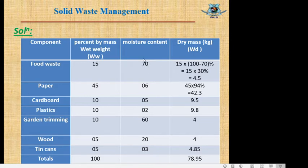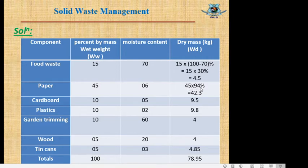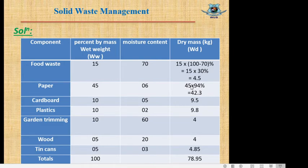If moisture content is 70%, then dry mass is 30%, so total dry mass for food waste will be 15 × 30% = 4.5 kg. For paper, total mass is 45 kg; if 6% is moisture content, dry mass is 94%, so total dry mass is 45 × 94% = 42.3 kg. Similarly, other data have been calculated. Students only need to show the calculation of the first item and fill in the table using a calculator.